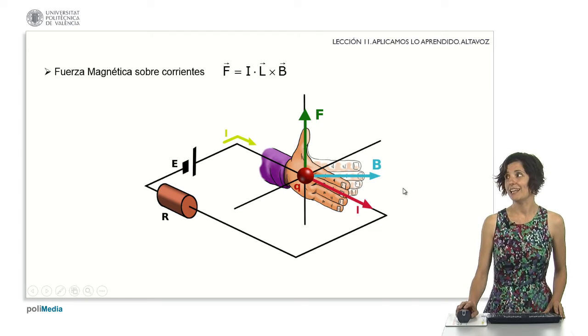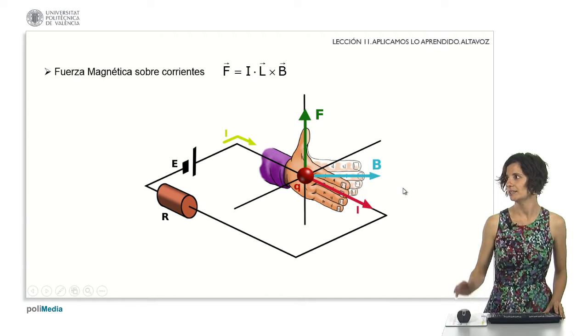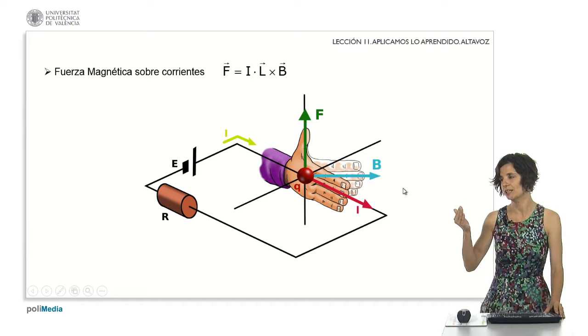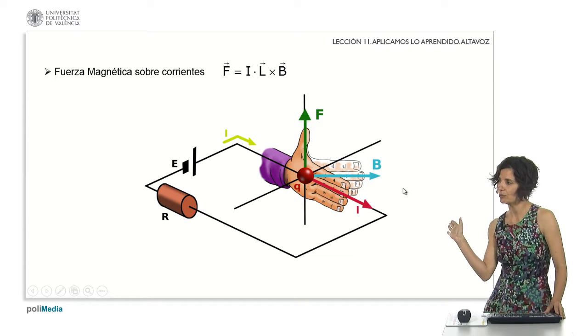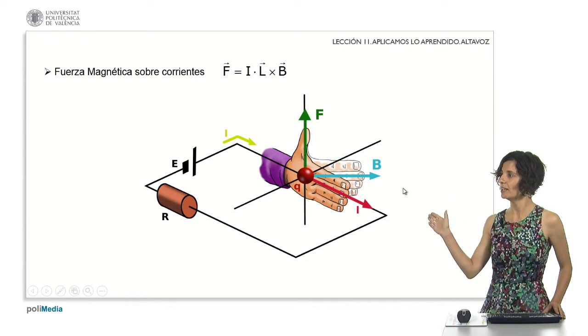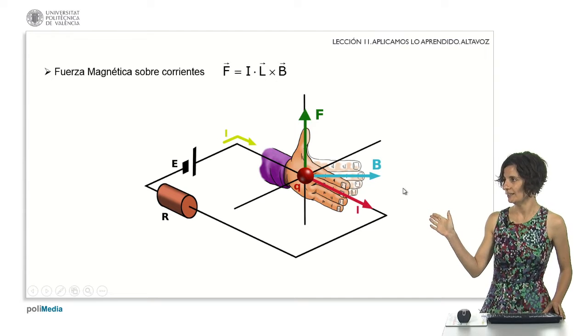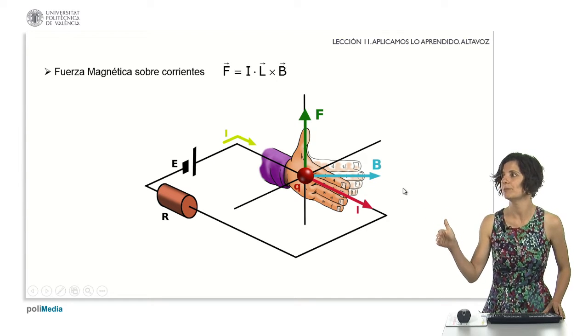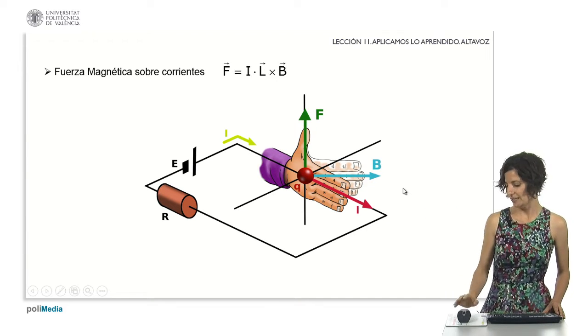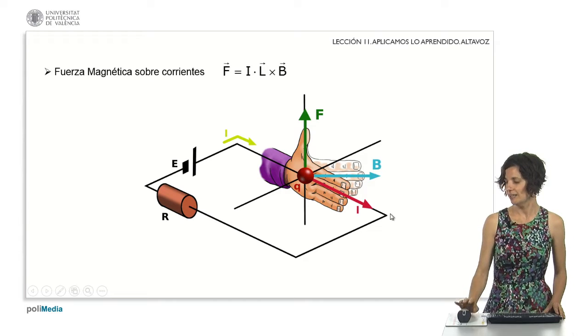The right-hand rule indicates the sense of the force. In this case, with the four fingers of the right hand, we must go from the sense of current flux to the sense of the magnetic field via the shortest path. The thumb indicates that the force, in this case, is vertical and upward.